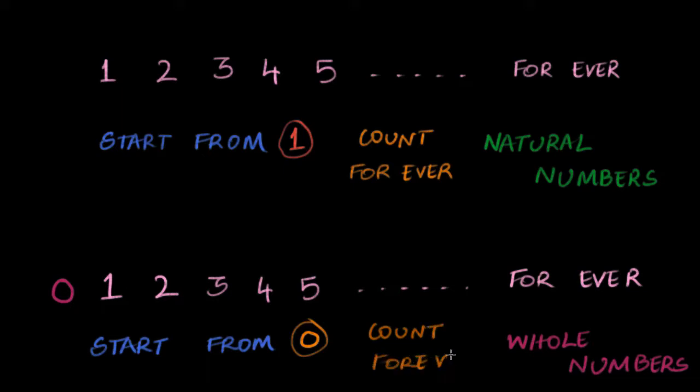So you can notice that the difference between this family called natural numbers and this family called whole numbers is not very big. The main difference is that for whole numbers, you start from zero and count forever. For natural numbers, you start from one and count forever.